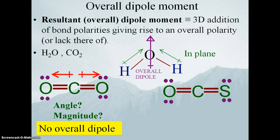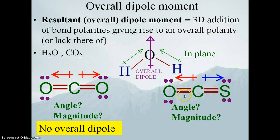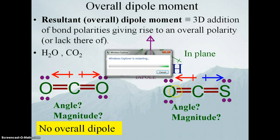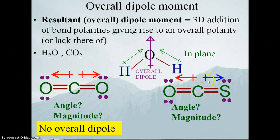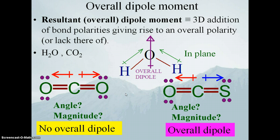What about OCS? It has an almost identical Lewis structure. The central carbon still has two groups of electrons, so it is a linear molecular geometry with bond dipoles, and the bond angle is still exactly 180 degrees. However, the magnitudes are not the same — we have sulfur on one side and oxygen on the other, and sulfur and oxygen are actually different elements with different electronegativities. So while the angle would cancel them out, the magnitude is not the same, so they don't cancel out. OCS has an overall dipole moment.